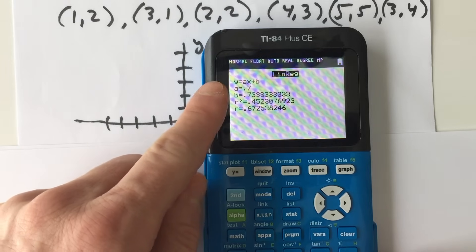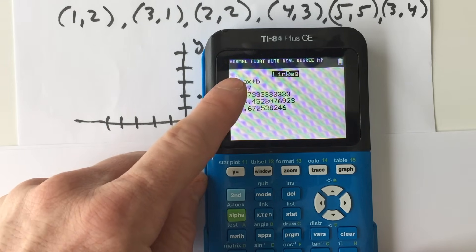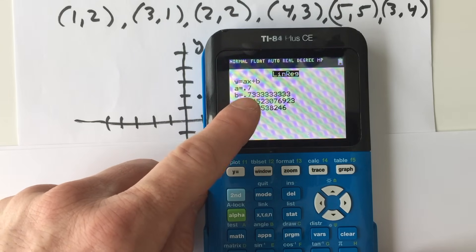So now what it's done is you can see it's given us the line of best fit, which is Y equals AX plus B. The A is 0.7, so that's like our slope. So Y equals 0.7X plus B, which is 0.73.